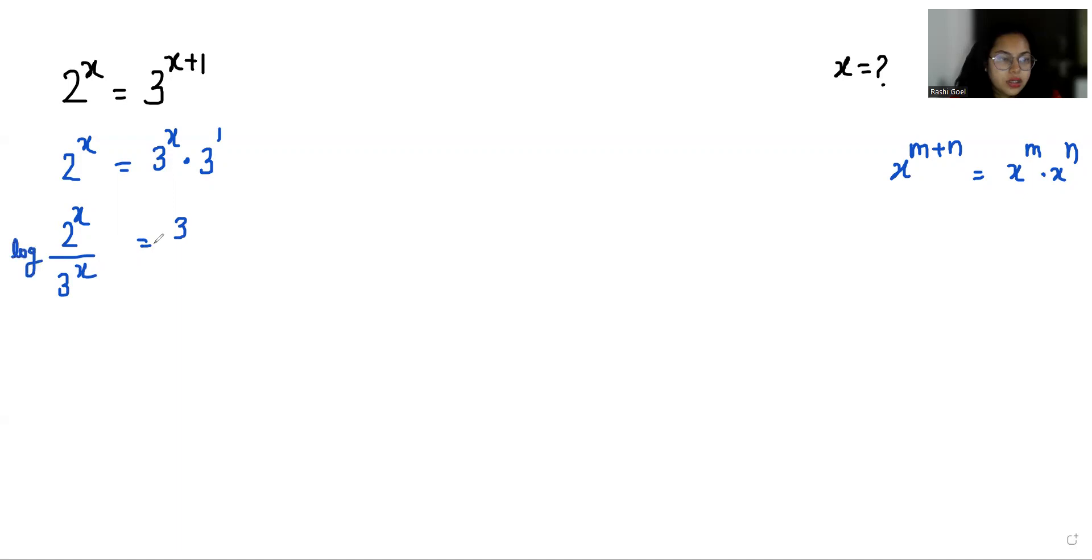So we can write 2 power x by 3 power x is equals to 3. Now I'm taking log on both sides, so log of 2 by 3 whole power x is equals to log 3.